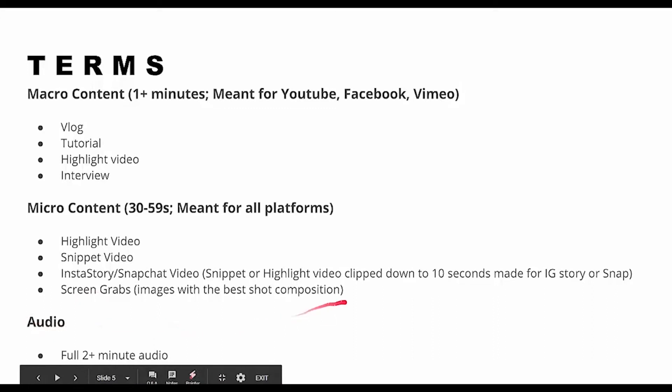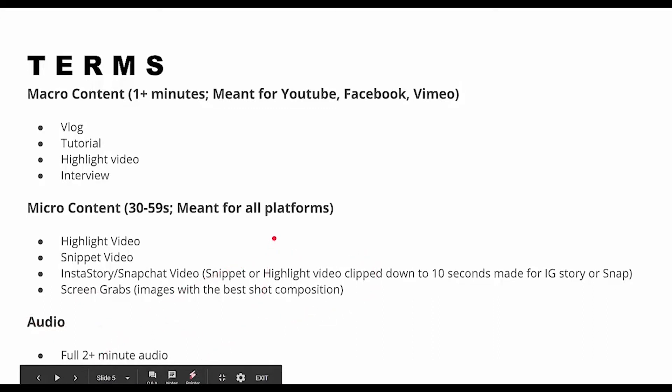And audio — this is pretty much the full two-minute audio as well, plus 10, 20, 30-second soundbites. This is the entire interview, which can be formatted as a podcast. Or if you have a 10 to 30-second rant about something insanely powerful and inspiring, you can use that soundbite as a voiceover for a highlight video. You can get pretty creative in how you mash up content from different parts of your library — especially once you have a really massive library built up.